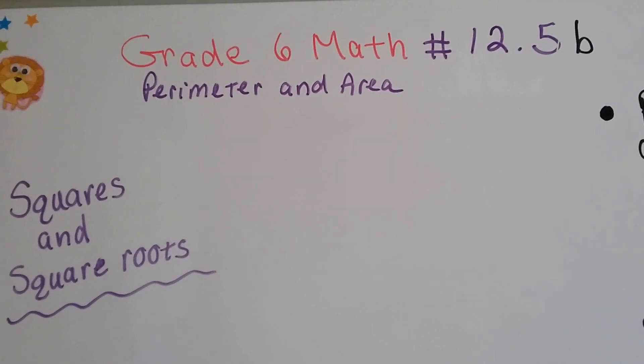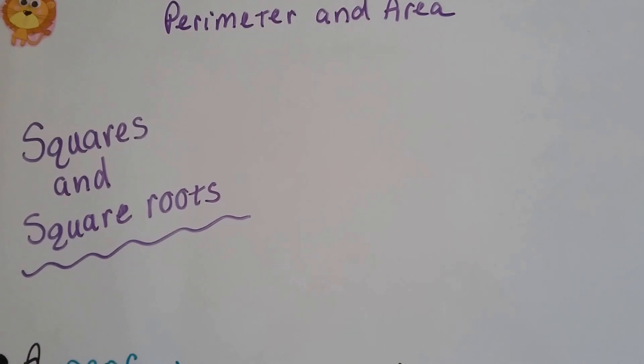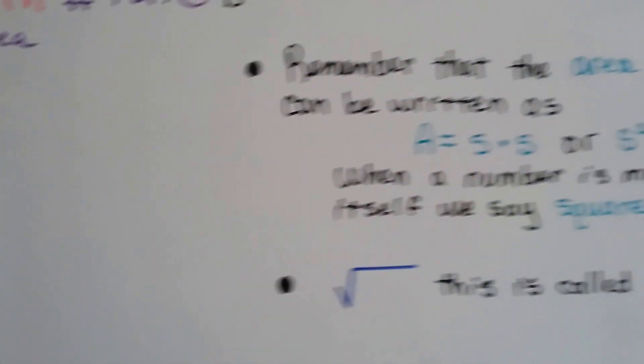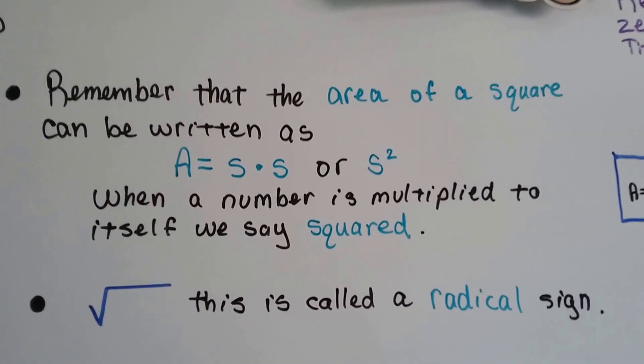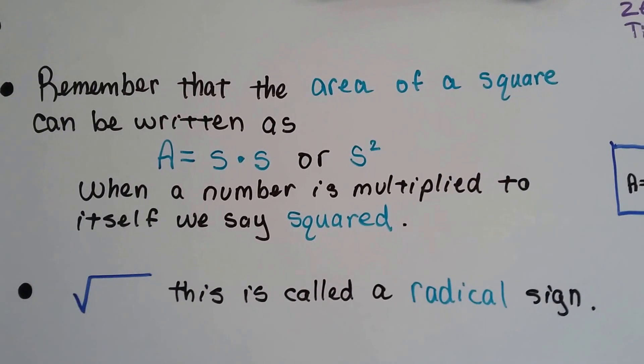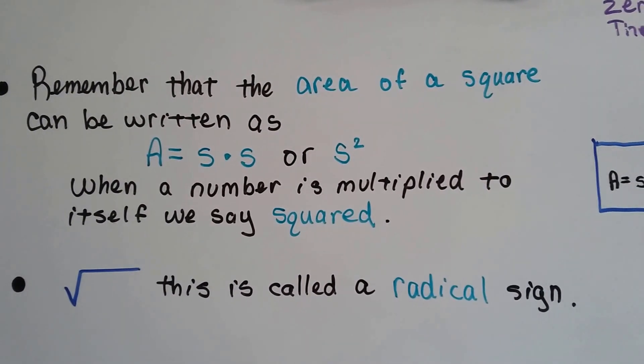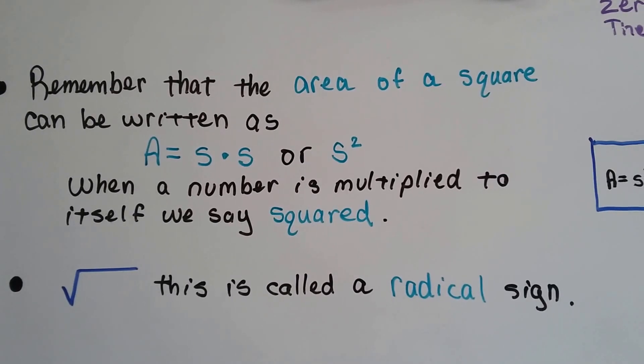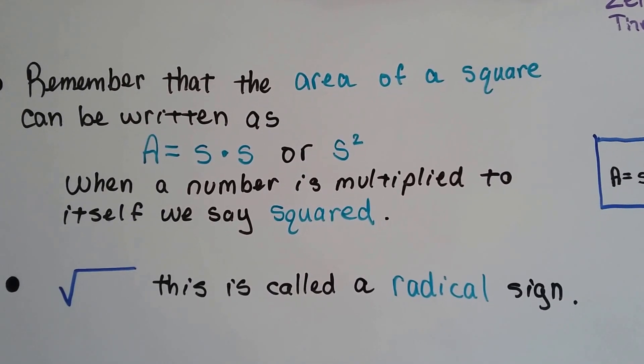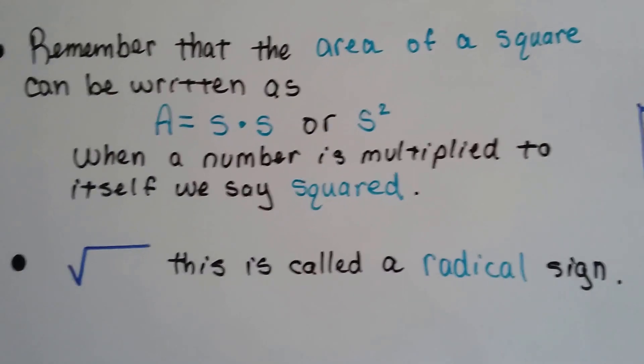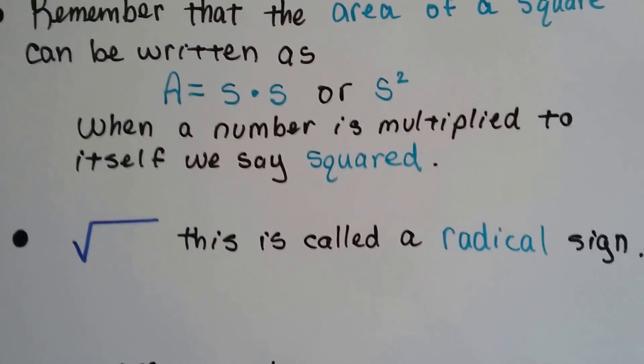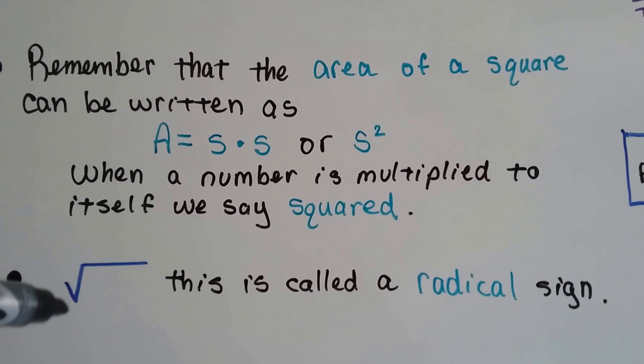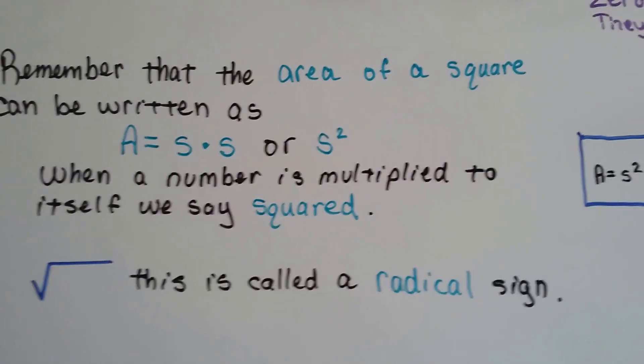Grade 6 math number 12.5b: squares and square roots. As we said in 12.5a, the area of a square can be written as A equals the side times the side or s squared. When a number is multiplied to itself or by itself we say squared. The symbol, the long division sign that looks like it's got a check mark on it, is called a radical sign.